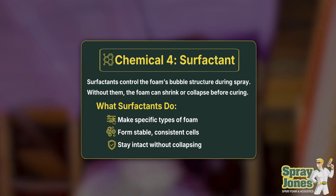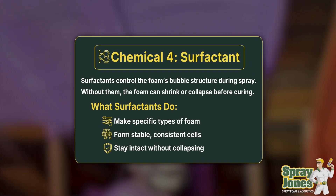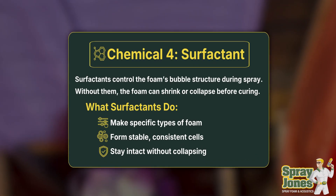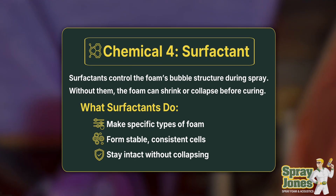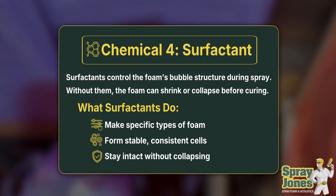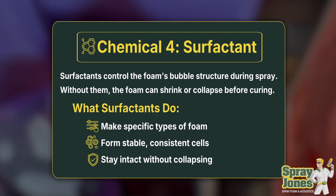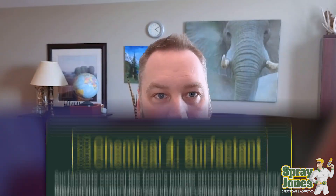A surfactant is added, which forms the type and shape of the cells and determines how resilient and strong they are. So we can make a very strong foam, a flex foam, a rigid foam, or a very high-density foam — the surfactant is what designs it that way.